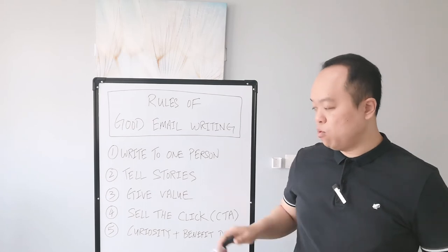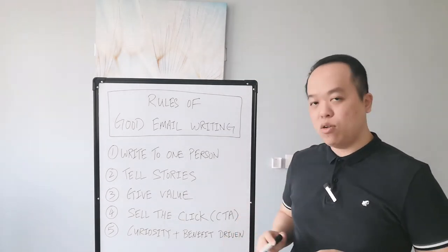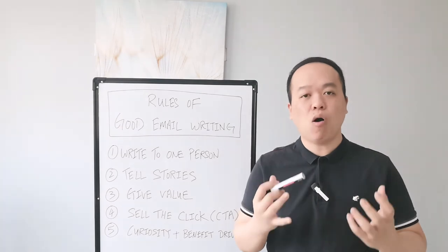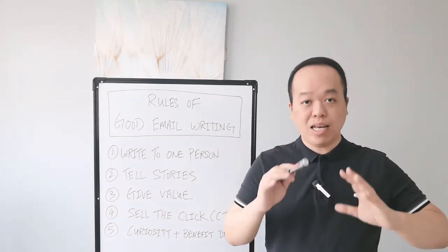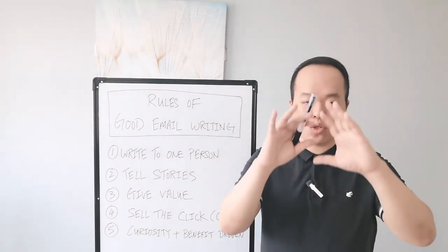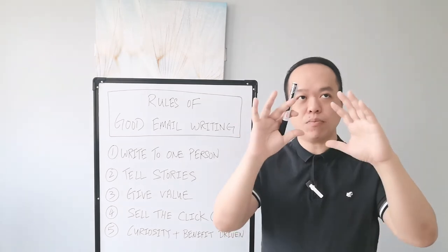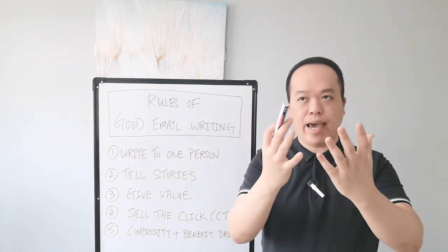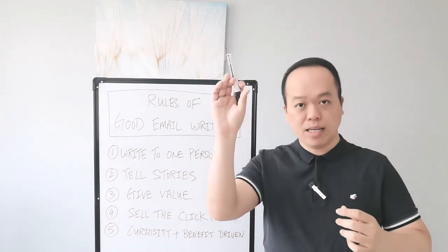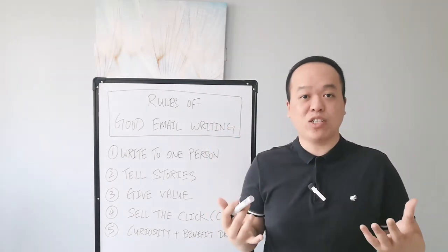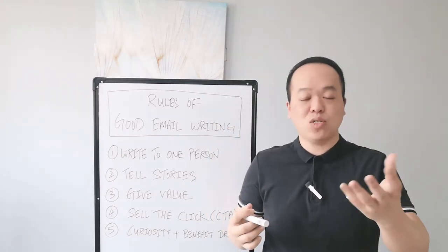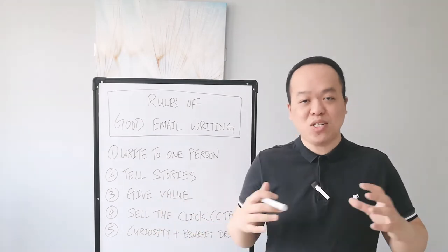Now rule number four is to sell the click. It means that you have to have a clear call to action. Let's say for example, if you write a good story in your body paragraph and also a good subject line, but at the end if there's no call to action, your subscribers wouldn't know what to do next.